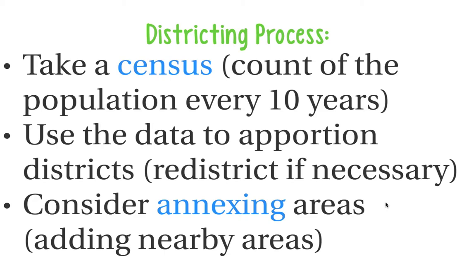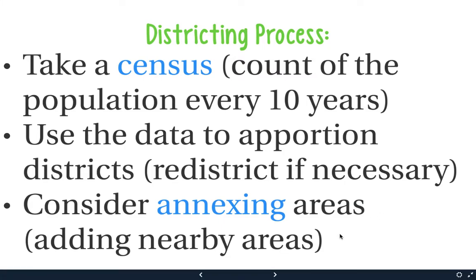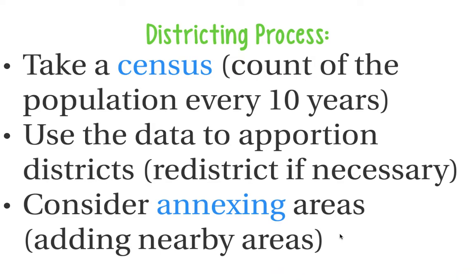Typically, a district is roughly 750,000 people — that is about the median number for a district. So if a state grows or shrinks by about 750,000 people, districts can be added or taken away. Districts can also annex nearby areas into their district. If one district has shrunk and another has grown, you can change the boundary so there's still the same number of districts, but the representative's area adjusts slightly so that everyone is still represented.